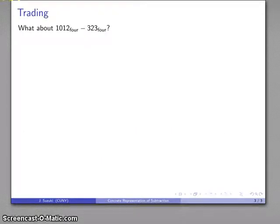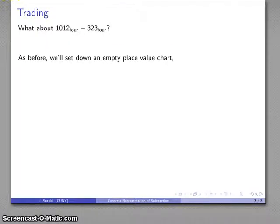Well, what if I try something else? How about 1012 base 4 minus 323 base 4. And so again, I'll set down an empty place value chart just to be able to organize everything. And again, I don't really need to do much more than remember that any one of these is 4 of these, and so on. I don't have to show what those look like, it's just convenient to do so.